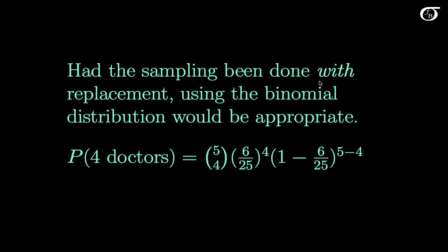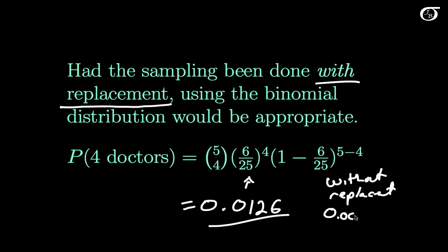But had the sampling been done with replacement, meaning if a person's name is picked, we look at it, we call them, we give them their prize, and then their name goes back in and we shake it all up again, then the probability of getting a doctor on any one trial would still just be 6 out of 25. And we simply throw this all into the binomial formula. This would be the appropriate binomial formula. And if we put all of that in, we get 0.0126. Now compare that to the probability we found previously doing the sampling without replacement using the hypergeometric distribution. There we found a probability of 0.00536. And the probability found from the binomial distribution with replacement is actually a fair bit different from that.